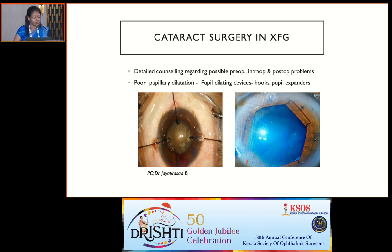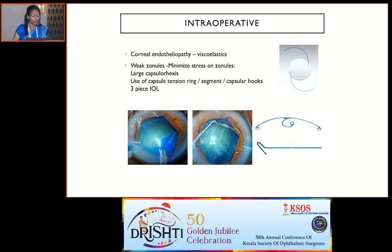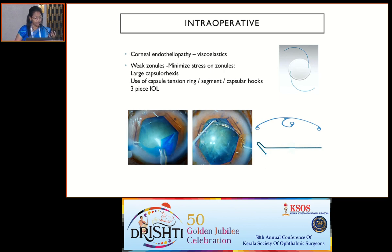You can have poor pupillary dilatation, so be ready with pupillary dilating devices — hooks, expanders, or whatever you prefer. There may be corneal endotheliopathy, so use generous viscoelastics; cohesive viscoelastics are preferred. Weak zonules are usually associated with this condition, so minimize stress on the zonules during all steps of cataract surgery. Start with a larger capsulorhexis, use capsule tension rings, segments, or capsular hooks depending on the degree of zonular dialysis, and use a three-piece IOL with the optic capture technique — placing haptics in the sulcus with the optic within the capsulorhexis margin.